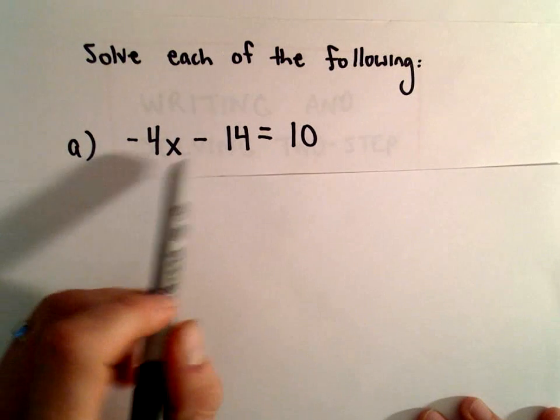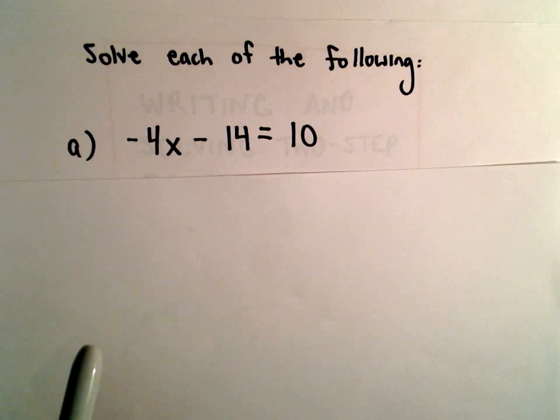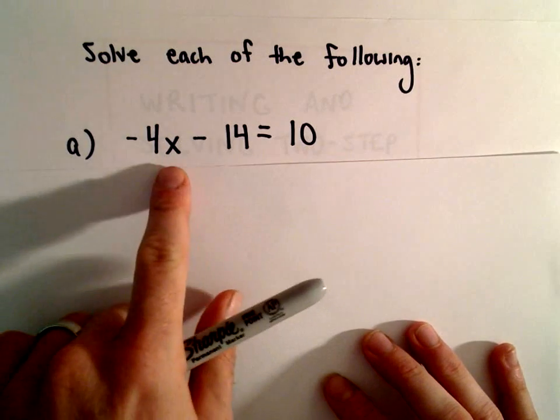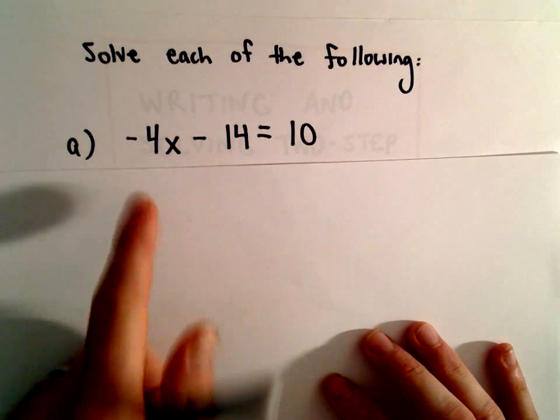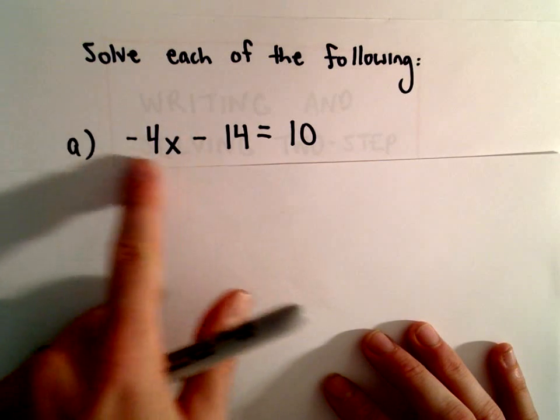So in part A here, we have negative 4x minus 14 equals 10. Typically, the way I always thought about it is, first I want to get, for an equation where there's an x to the first power or a variable to the first power, I want to get the term involving just x all by itself.